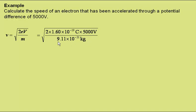divided by the mass of the electron from the datasheet 9.11 times 10 to the minus 31 kilograms all square rooted gives a speed of the electron of 4.2 times 10 to the 7 metres per second.